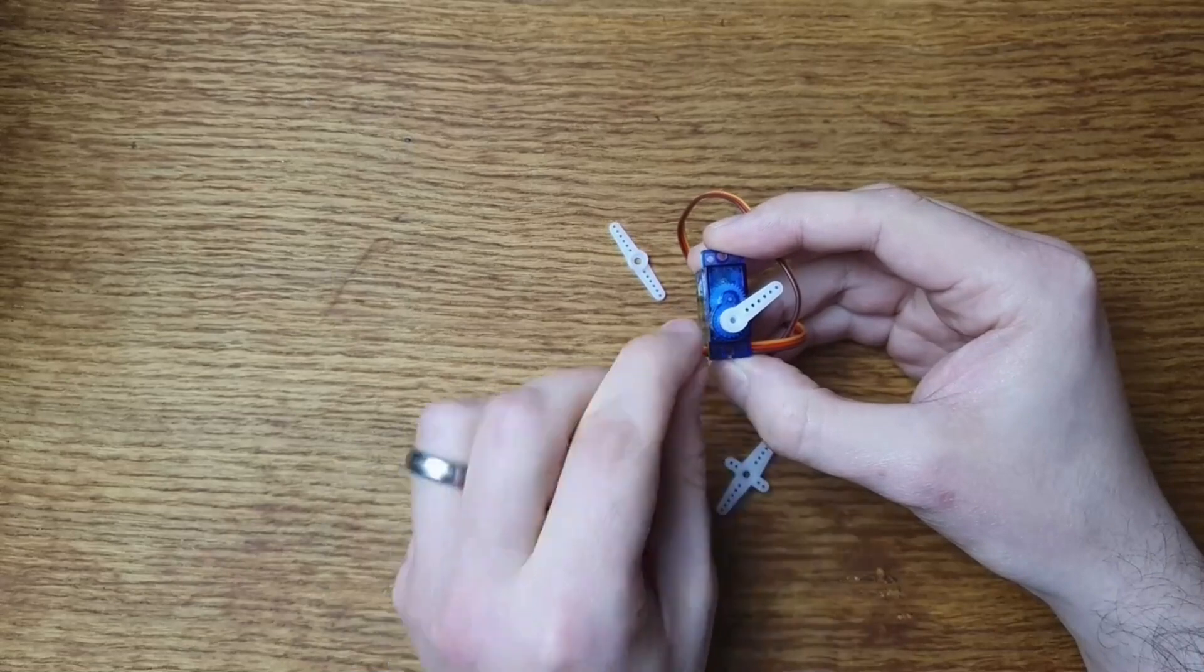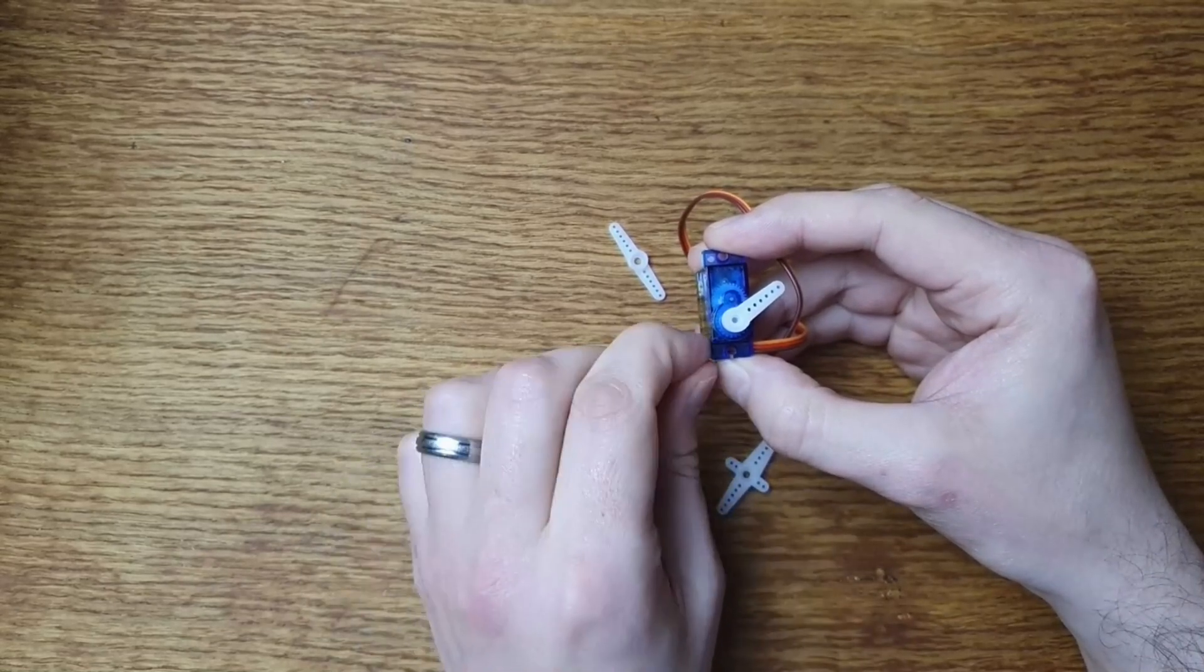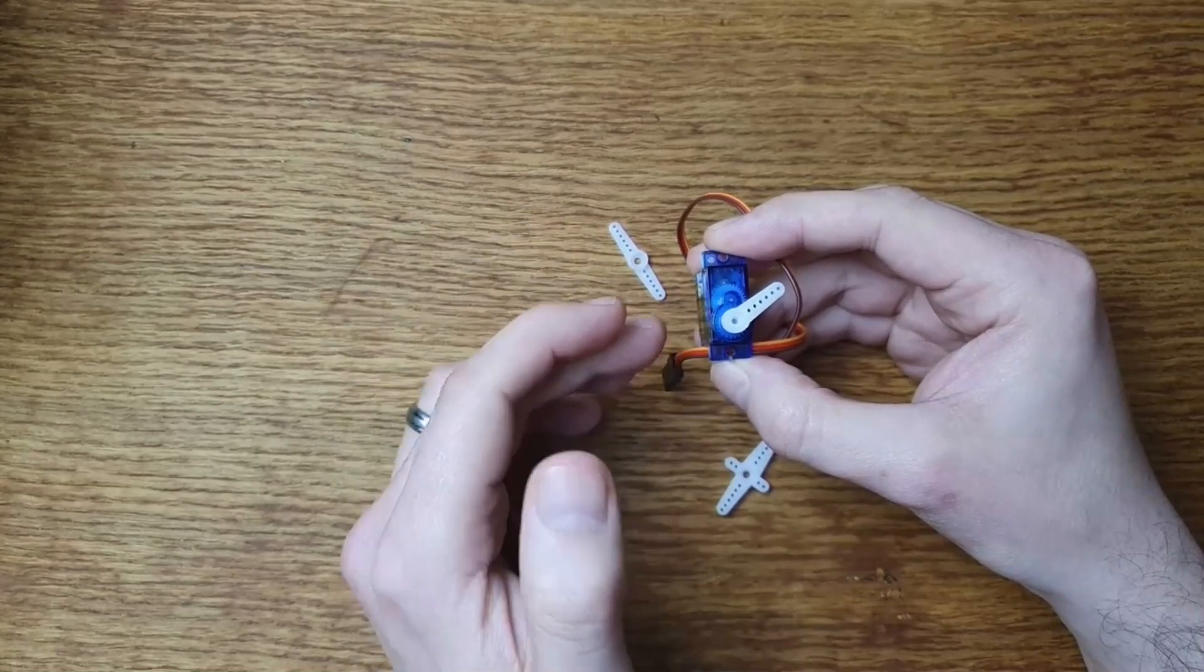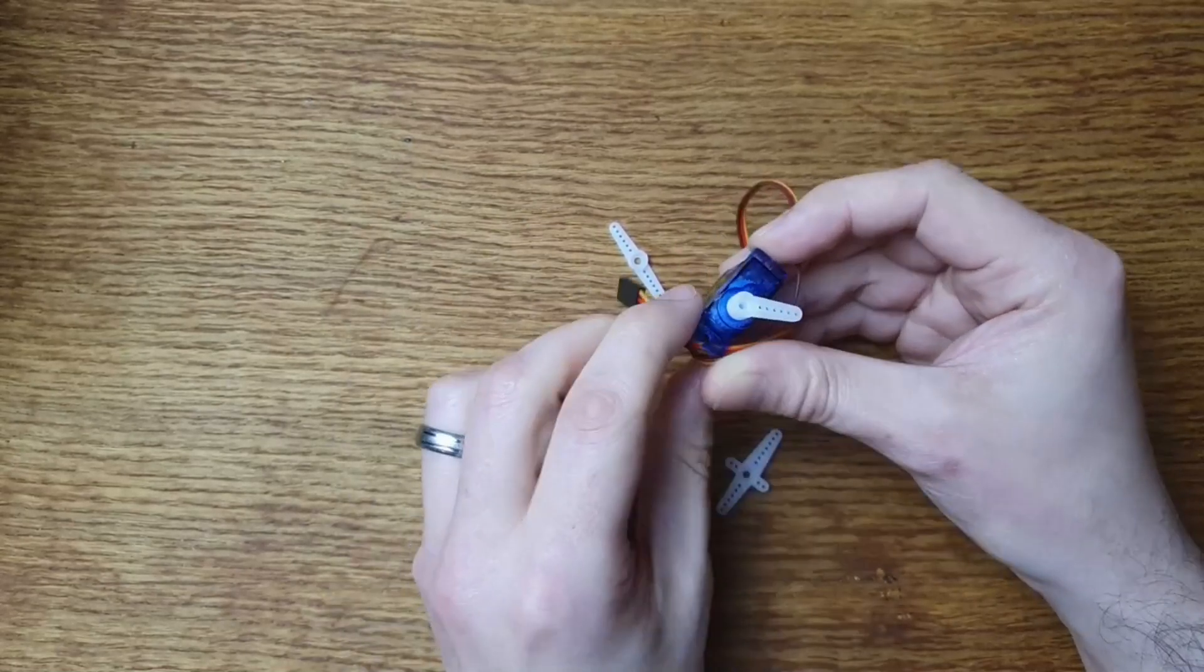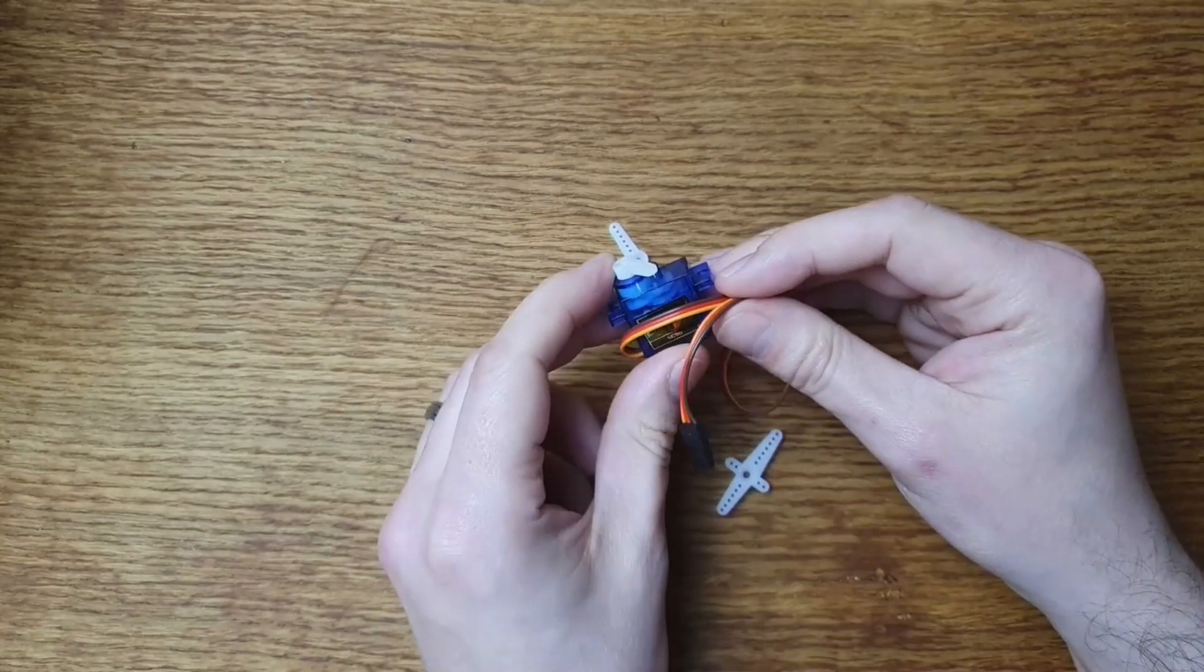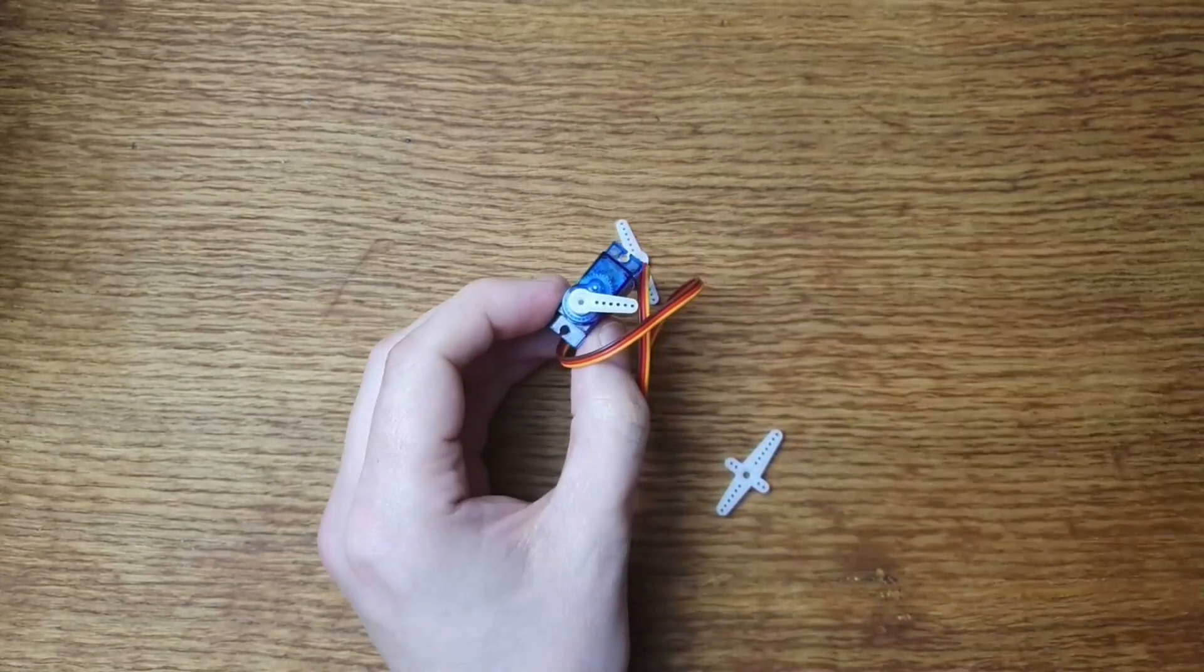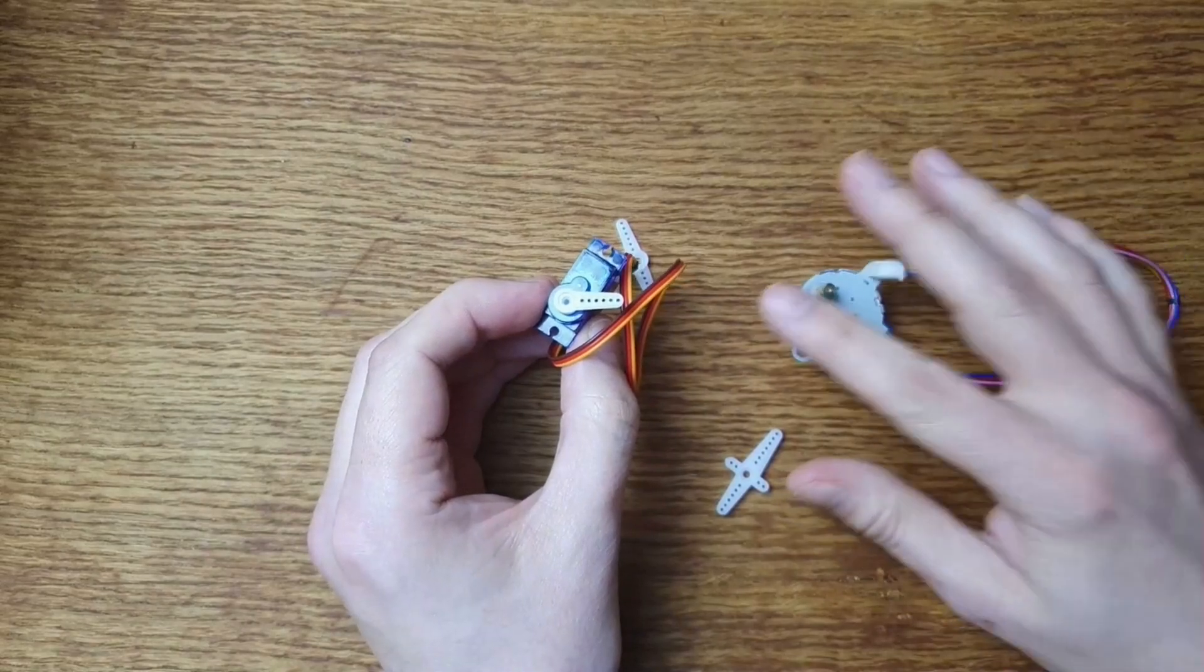So with a servo, you always tell it where you want it to be and you let it work out how it has to move in order to put itself at that position. So that's a very useful feature of a servo. And it's the fundamental difference between a servo motor and something like this stepper motor.